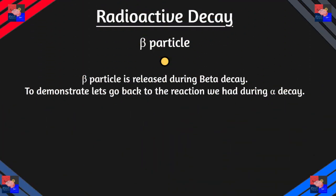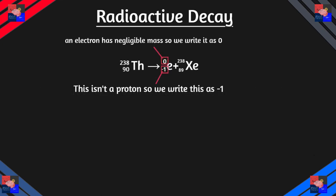Now let's look at the beta particle. The beta particle is basically an electron. The thorium-234 turns into xenon, and since the electron is not a proton, we write the atomic number as negative one. In our next video about radioactivity, we would learn more about it as we go through nuclear equations.